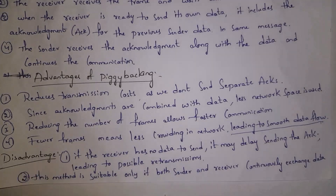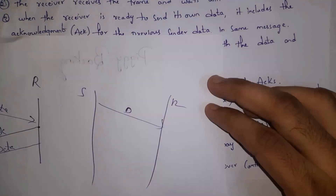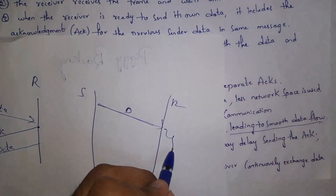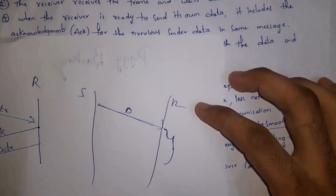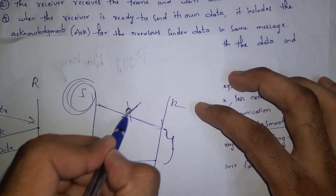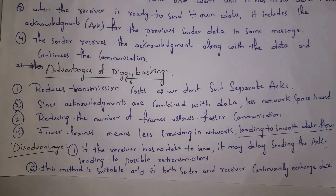These are the disadvantages of piggybacking. If the receiver has no data to send, then the receiver will delay in sending acknowledgement. Whenever the sender sends data and the receiver has no data to send, the receiver will not send acknowledgement. So whenever there is no reply from the receiver, the sender will think that data has not reached and will resend the data. Therefore, piggybacking is suitable only if both sender and receiver continuously exchange data.